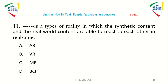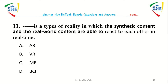Question number 11: Dash is a type of virtual reality in which the synthetic content and the real-world content are able to react to each other in real time. Options: A) AR, B) VR, C) MR, D) PCR.